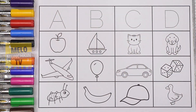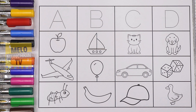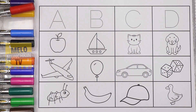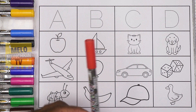Hello kids, welcome to my channel! Today in this video we will learn alphabets from A to D along with words starting from these letters: A, B, C, D. So let's get started. First, I'll take red color to write the letter A.